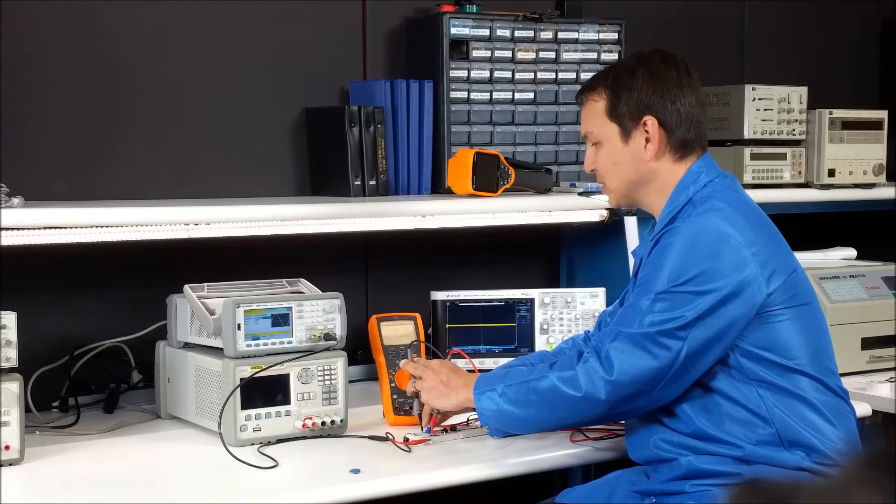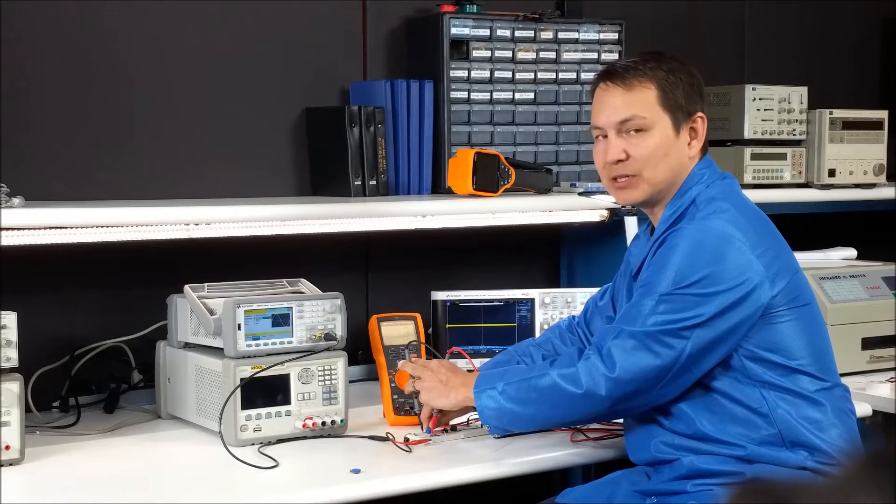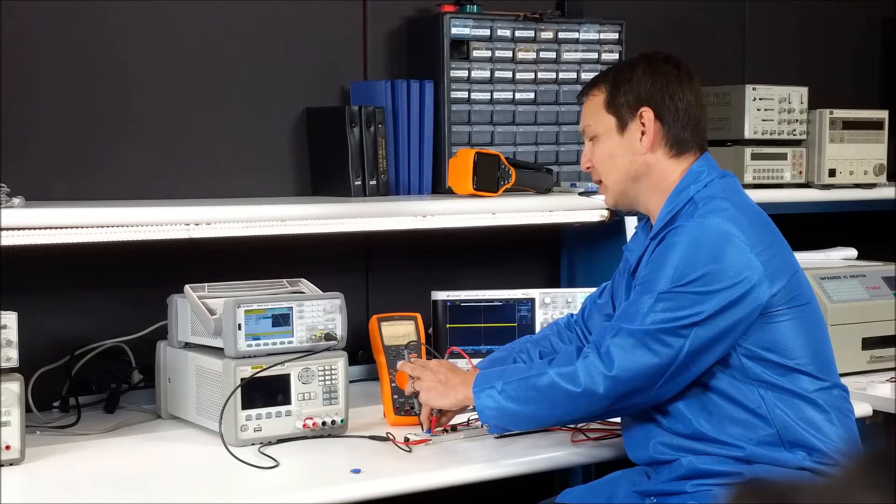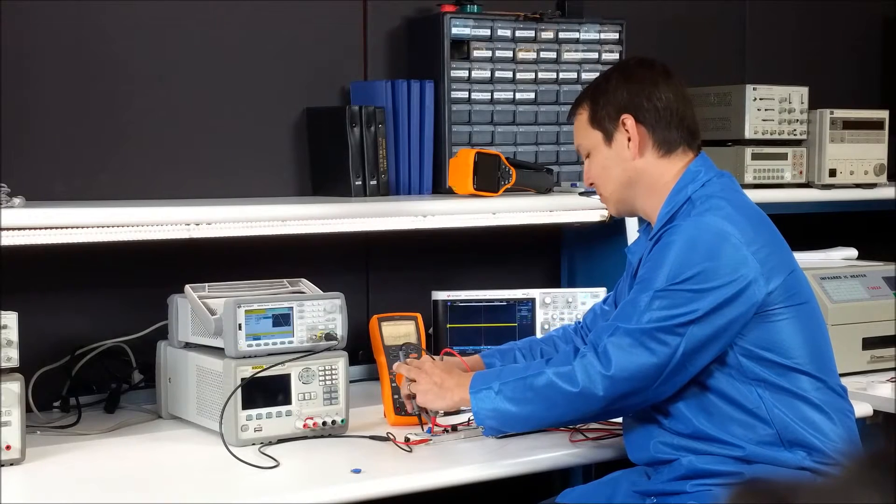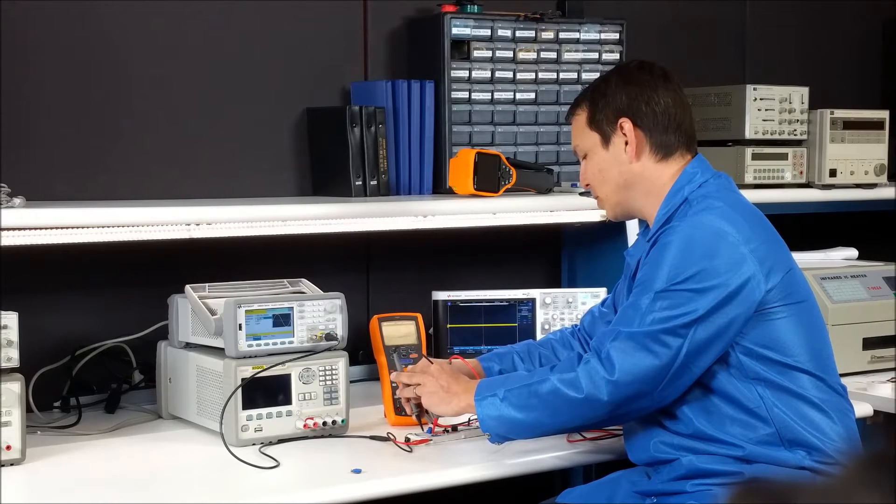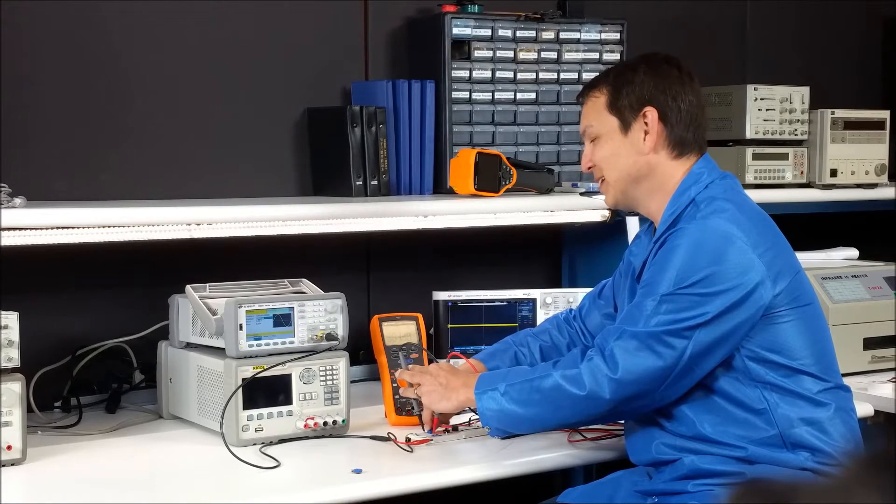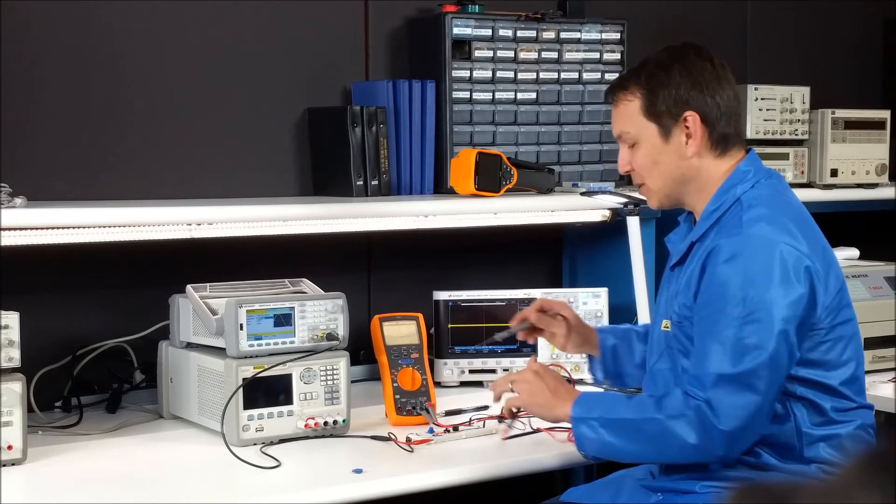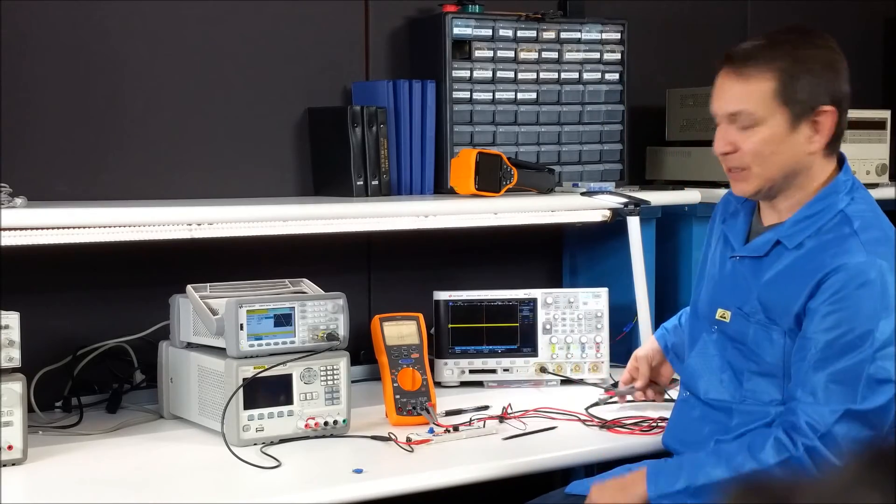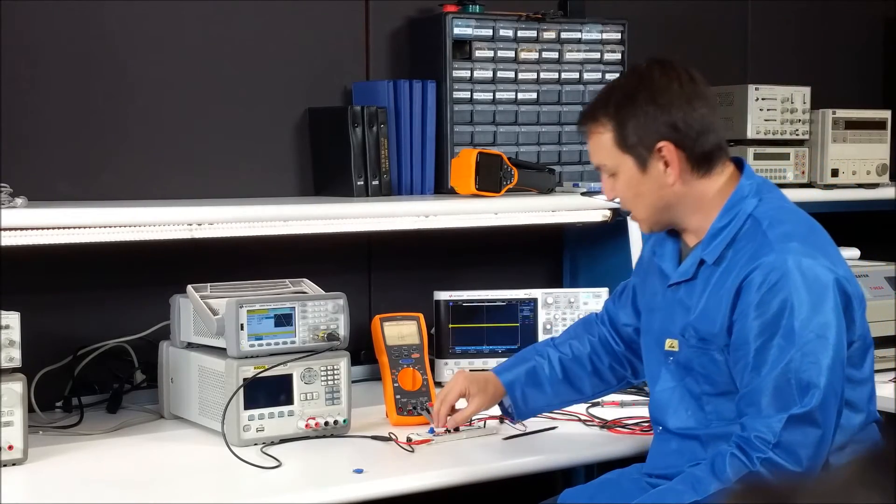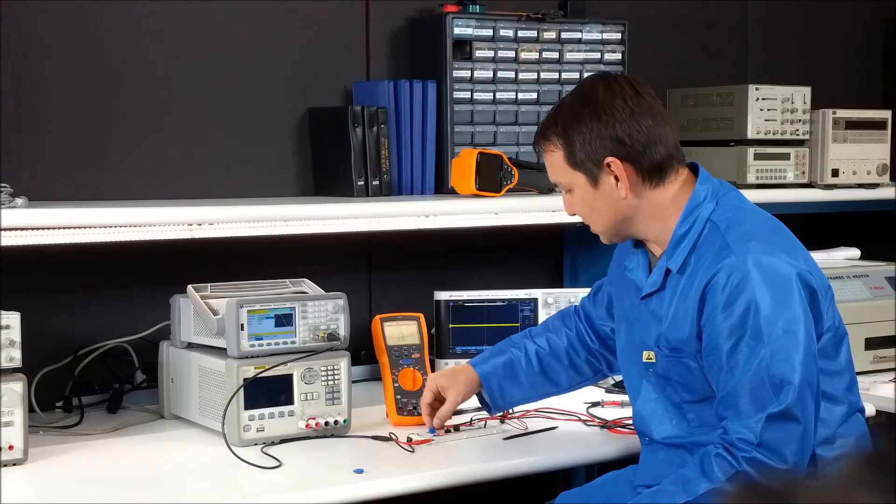The potentiometer is a 1k potentiometer and it will vary between about 8 to 10 ohms on up to a thousand. So they're just about equivalent and we can see that here in just a second when I run a signal through it.